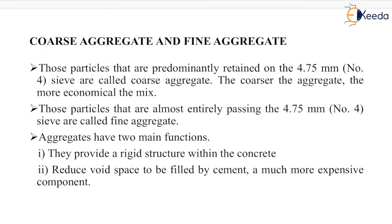Coarse aggregates are particles predominantly retained on the 4.75 mm sieve (IS sieve number 4). The coarser the aggregate, the more economical the mix. Fine aggregates are particles almost entirely passing the 4.75 mm sieve. Aggregates have two main functions: first, they provide a rigid structure within the concrete; second, they reduce void space to be filled by cement, which is a much more expensive component.